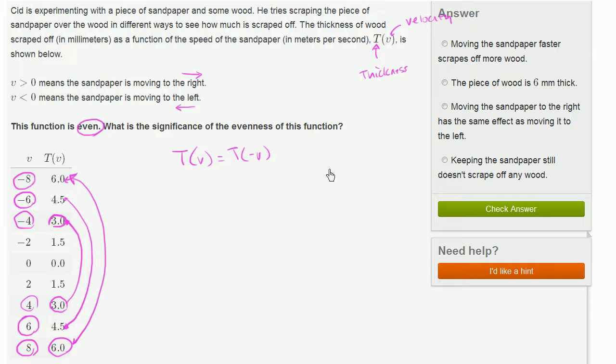Now let's see which of these choices are consistent with what I just said. Moving the sandpaper faster scrapes off more wood. Well that's true. We see as the speed increases or the magnitude of the speed increases, we scrape off more wood. This negative 8, you might say, hey, that's lower than negative 2, but the magnitude is larger. We're going 8 meters per second to the left and we're scraping off more. So this is a true statement...